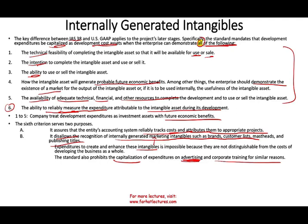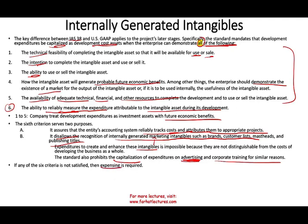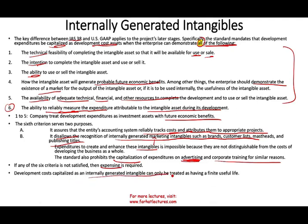If those six criteria are not met, we simply expense the expenditure. Development costs capitalized as internally generated can only be treated as having a finite useful life — meaning they must be amortized. The starting date for amortization is when the asset is available for sale, if you're creating it to sell, or when you start to use it in your business.